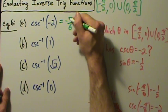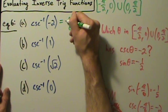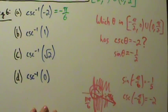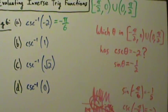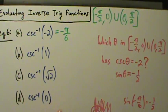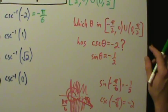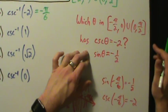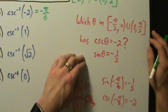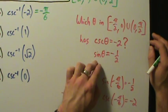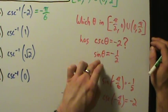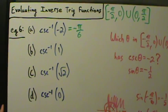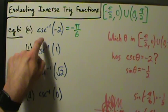It might seem like a lot of work because we spent a lot of time explaining it, but it's really not that bad. It's just a matter of knowing the unit circle, knowing the range of the inverse trig function, and as a shortcut, doing the reciprocal thing to express it in terms of sines instead of cosecants — so when you go back to the unit circle it's easier to think about. That's part A: inverse cosecant of negative 2 equals negative pi over 6.